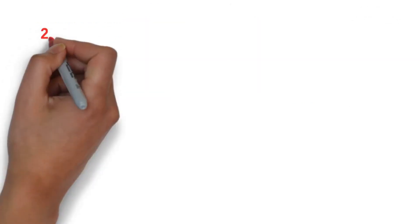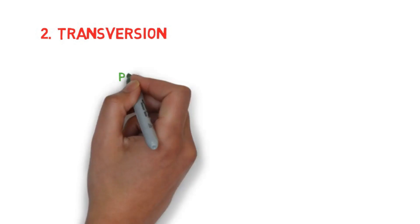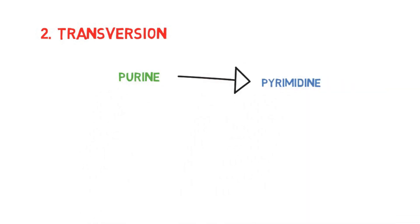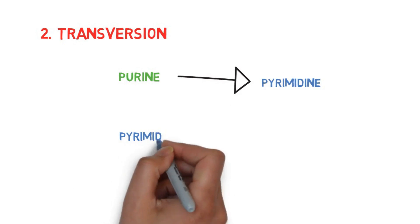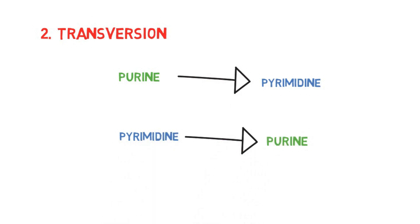Now we see the second subtype: transversion. In transversion, purines are replaced by pyrimidines, and pyrimidines are replaced by purines — it is the opposite. Purines are replaced by pyrimidines, and pyrimidines are replaced by purines.